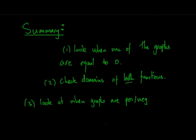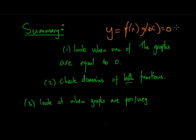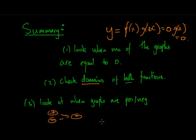In summary, with product functions there are 3 key things. First, look at when one of the graphs equals 0 — when one function is 0, the product function must also equal 0. Second, check the domains of both functions, since restrictions on one create restrictions on the product, just like sum functions. Third, look at when the graphs are positive and negative. If one is positive and one is negative, the result is negative; if both are positive or both are negative, the result is positive for that part of the graph.